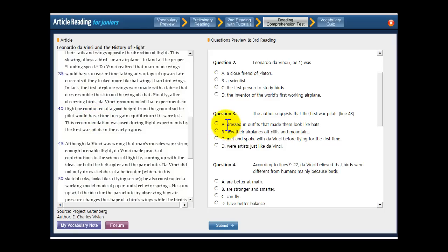So look at the choices. They dressed in outfits that made them look like bats. That's definitely not true. It has something to do with how they flew and where they started their flights from. So get rid of A. What about B? They flew their airplanes off cliffs and mountains. That sounds like what I was talking about before, right? They started off at a good height from the ground. And a hill or a mountain is something that's a good height off the ground. So let's choose B, making sure that the other two are wrong before we move on. Did they meet and speak with da Vinci before flying for the first time? Definitely not, because he was living in the 16th and 17th century and, or the 15th and 16th century, and they were flying in the early 1900s, which is the 20th century. So that's hundreds of years after Leonardo died. It doesn't say they were artists. It says that they flew off of places that were high. So it's definitely not D either. B is definitely the answer.